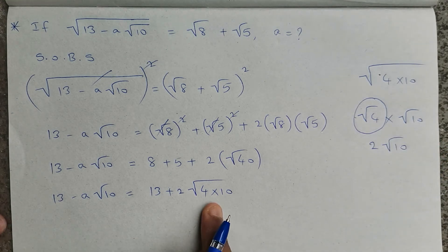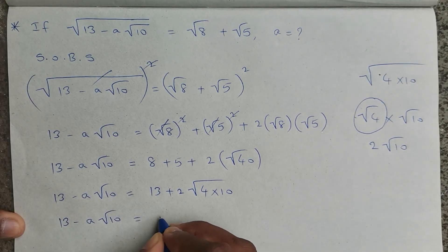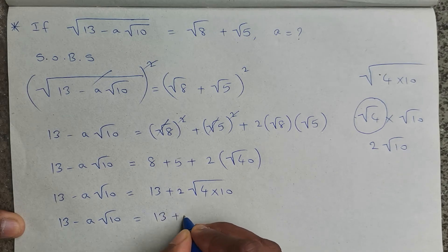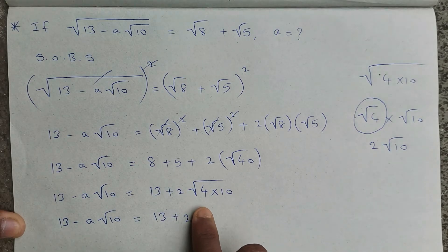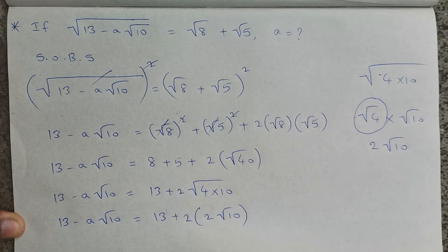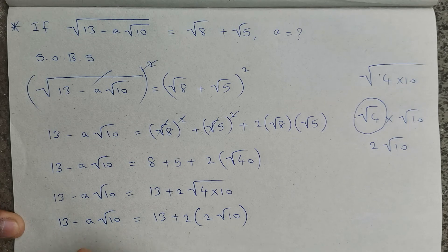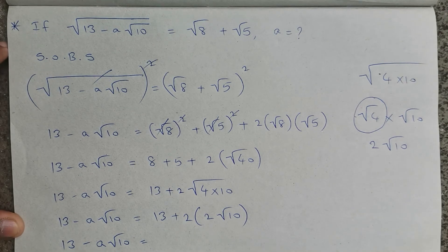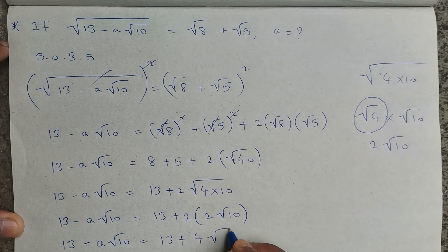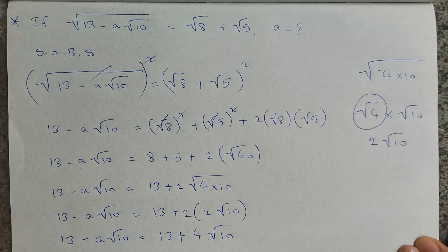So √(4 × 10) is nothing but 2√10. Writing the full equation: 13 − a√10 = 13 + 2·2·√10, which simplifies to 13 − a√10 = 13 + 4√10.